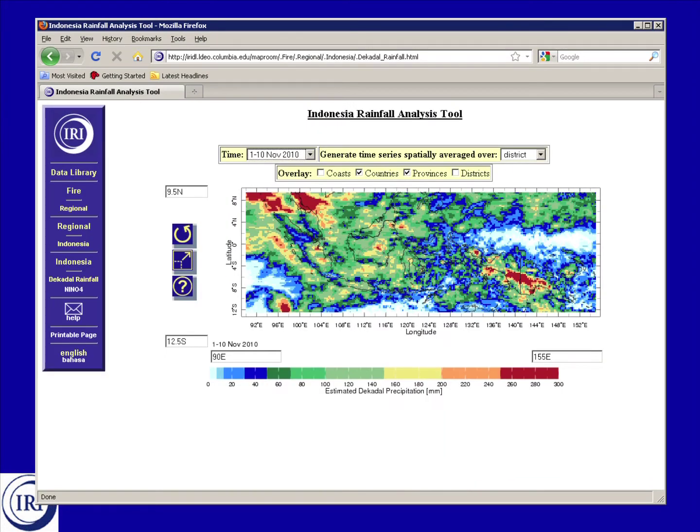When you do, you'll be shown a map of precipitation estimates over Indonesia for the latest available DECADEL, which in this case is the 1st through the 10th of November 2010.